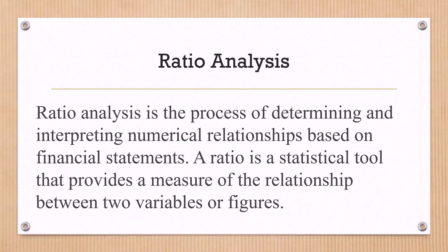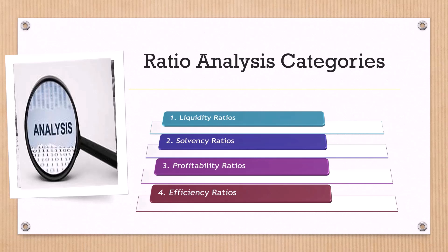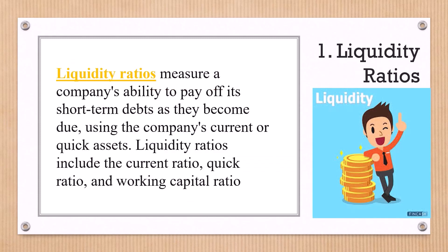Ratio analysis is categorized into four types: the first is liquidity ratio, then solvency ratio, profitability ratio, and efficiency ratio. The solvency ratio is also called the financial leverage ratio, and the efficiency ratio is also called the activity ratio or turnover ratio. Now we will go through each and every category of ratio. The first ratio is the liquidity ratio.